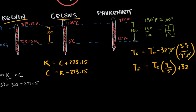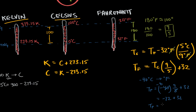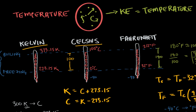As a fun fact to practice, it turns out these temperature scales cross paths at one temperature. Plugging in negative 40 degrees Celsius: T_F equals negative 40 times 9/5 plus 32. That gives us negative 72 plus 32, which equals negative 40 degrees Fahrenheit. So negative 40 degrees Celsius equals negative 40 degrees Fahrenheit. This also shows that both the Celsius and Fahrenheit scales can have negative values.